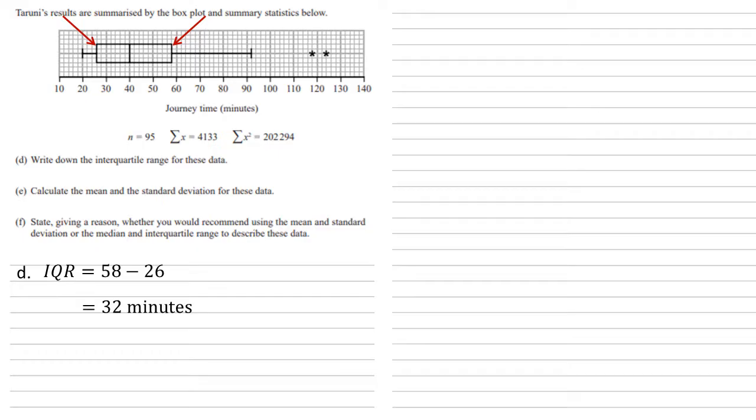For Part E, we need to calculate the mean and the standard deviation for these data. The mean is the sum of x divided by n. Using what we've been given, that's 4133 over 95, which gives us 43.505. This could be rounded to one or two decimal places as well.